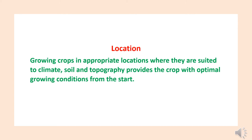Location is one of the components which is impacting IPM strategies. We have to grow crops in their suitable environmental conditions. Growing crops in appropriate locations where they are suited to climate, soil and topography provides the crop with optimal growing conditions from the start, meaning there will be little impact from pests and the crop will be healthy, allowing us to get the desired yields.